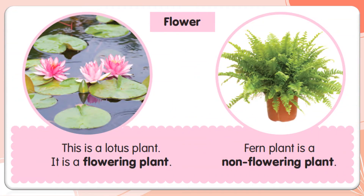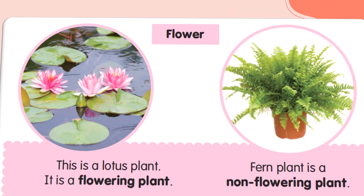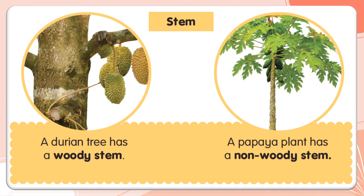Let us look at some examples. For flower: the lotus plant is a flowering plant, and the fern plant is a non-flowering plant. For stem: a durian tree has a woody stem, and a papaya plant has a non-woody stem.